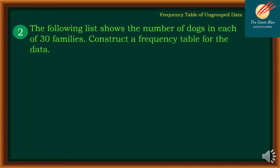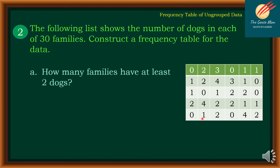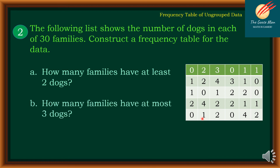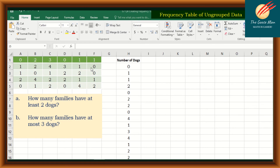Let's move on to our second example. The following list shows the number of dogs in each of 30 families. Construct a frequency table for the data and answer the questions. We have 6 columns and 5 rows of ungrouped data, and we will use Excel to construct the frequency table.